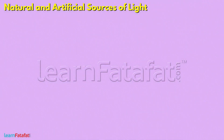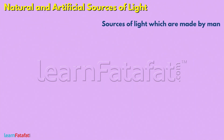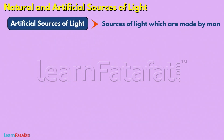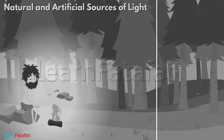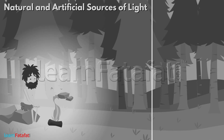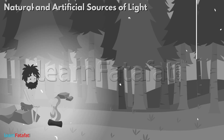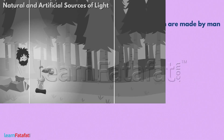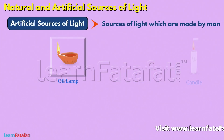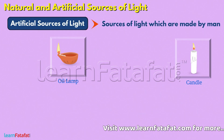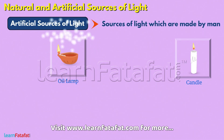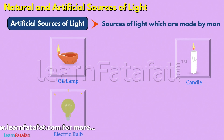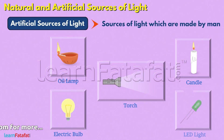Beside these sources, there are many other sources of light which are made by man and are called artificial sources of light. Our ancestors produced fire by burning wood and its flame acted as a source of light for them. Now we use oil lamps and candles in place of wood. Oil lamp, candle, electric bulb, torch, and LED lights are artificial sources of light.